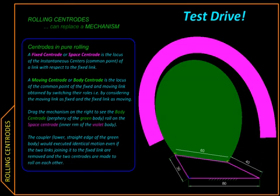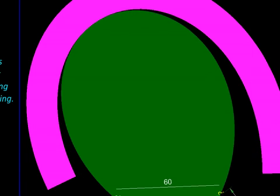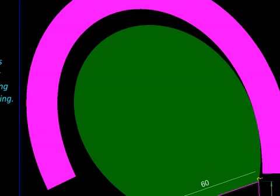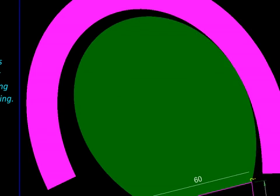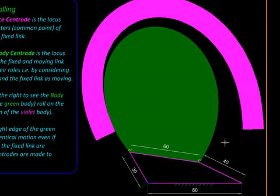Let us take a closer look here. So the green shape which is nothing but the body centrode is actually making a rolling contact with the purple shape, the fixed centrode. And finally, an interesting reversal of cause and effect.